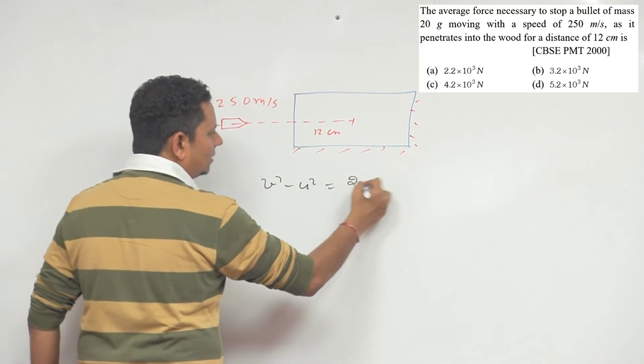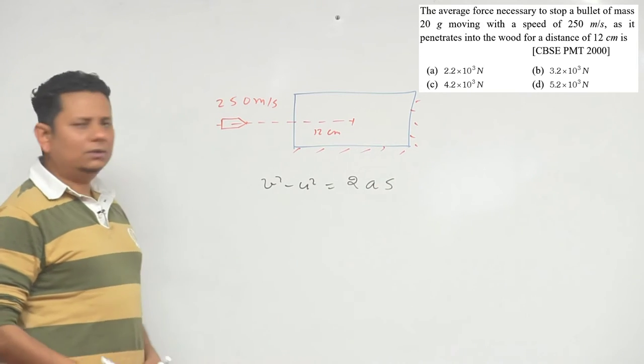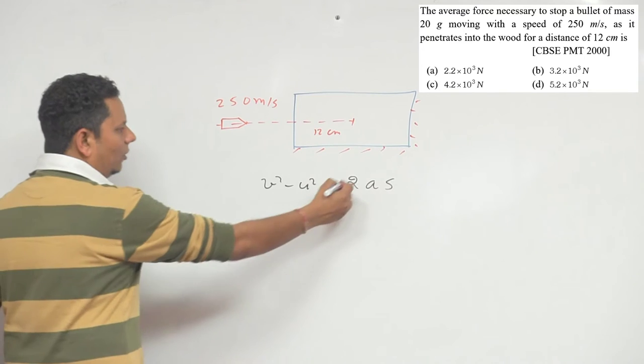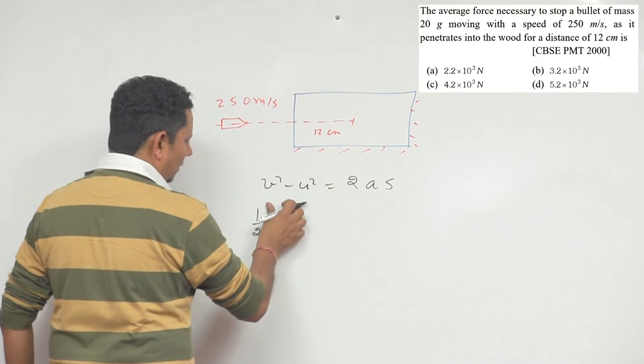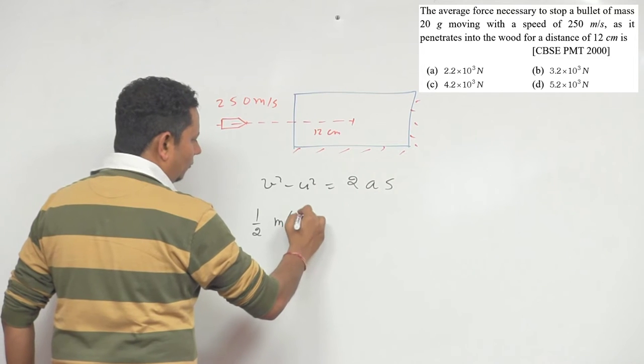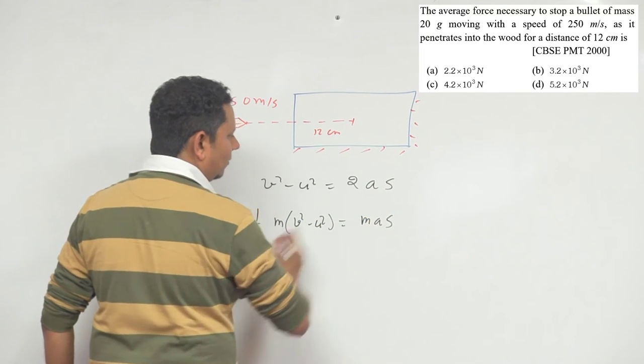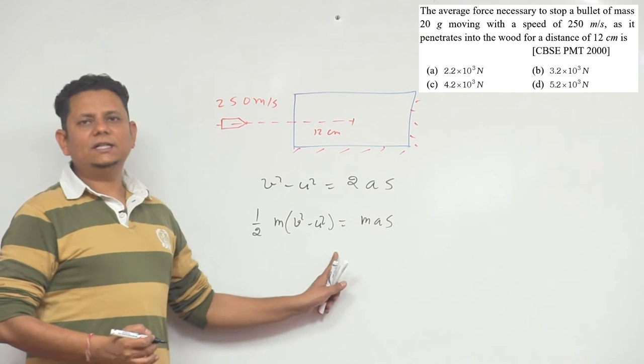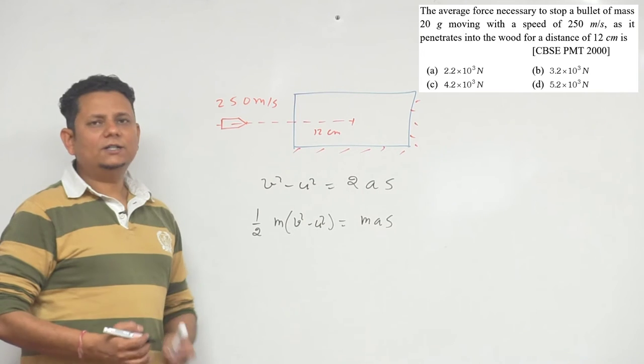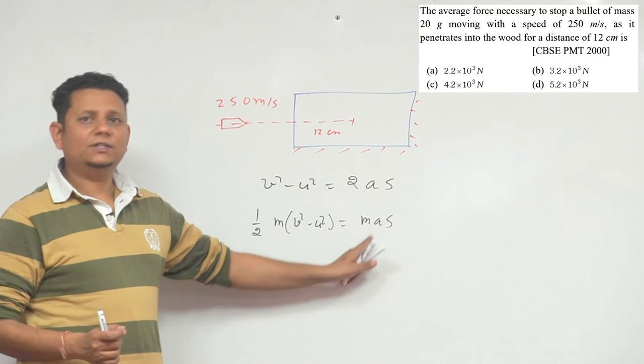v square minus u square is equal to 2 a s. Agar dono side pe hum is ko m se multiply karte hai, aur is two ko niche liya hai, to ye ho jaega half m, v square minus u square will be equal to m a s. Is ko agar dekhenge, to left hand side jo bana hai, this is called change in kinetic energy. Right hand side jo bana hai, ye force multiplied by displacement hai, which is actually work done.